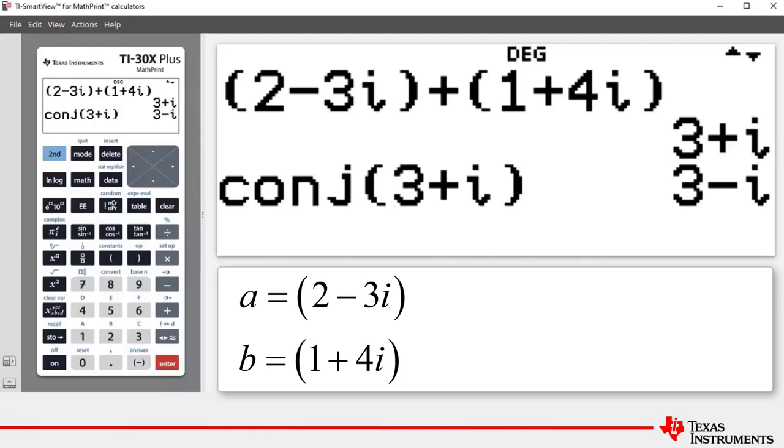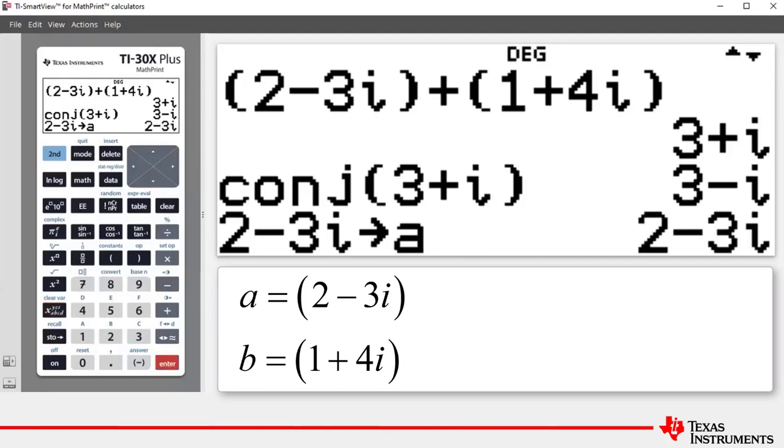Let's first store the two minus three i. I'm going to type two minus three i, press the store key, and then the button above is the variable key. We just press it one at a time until we get to a and press enter. So a is now complex number two minus three i.